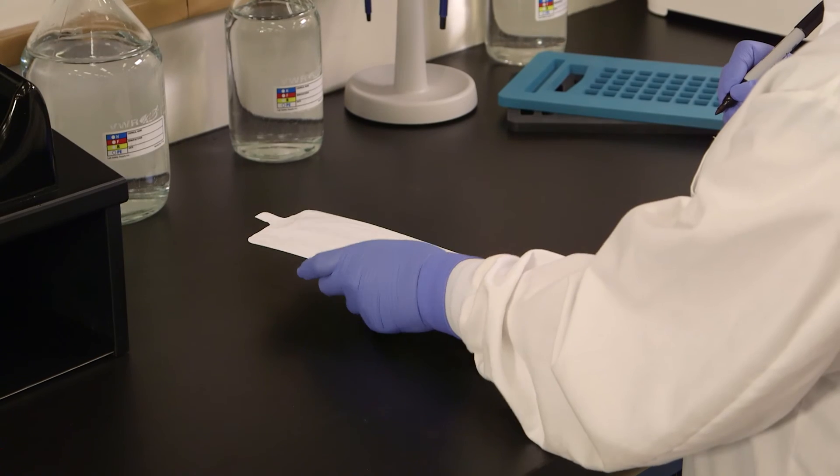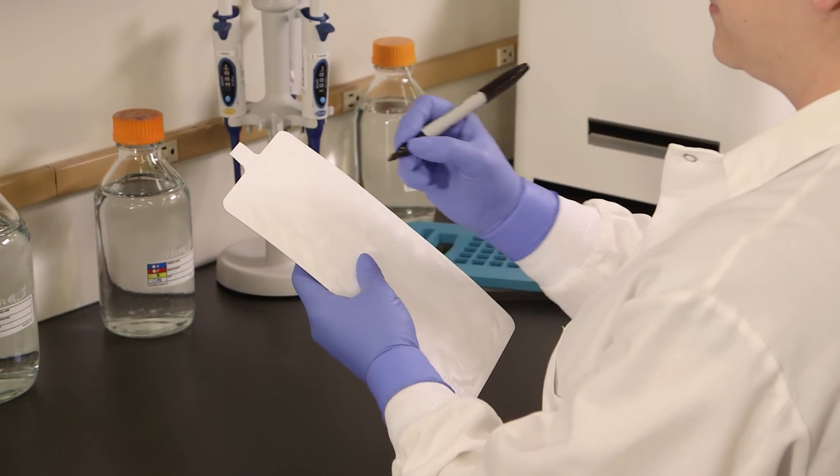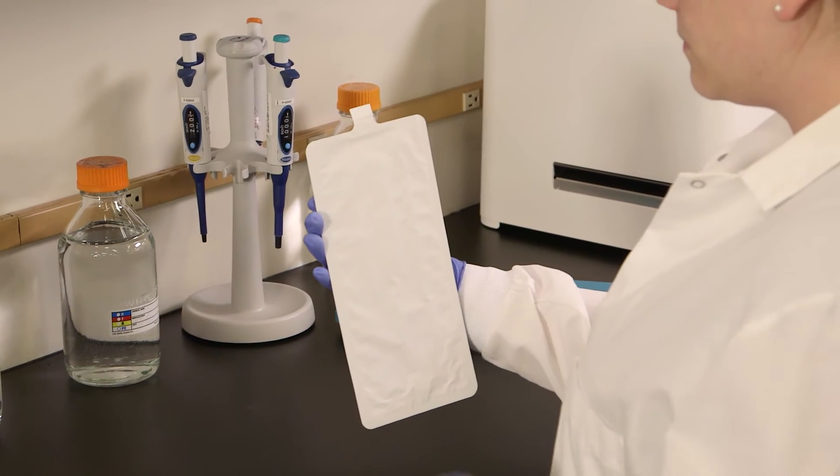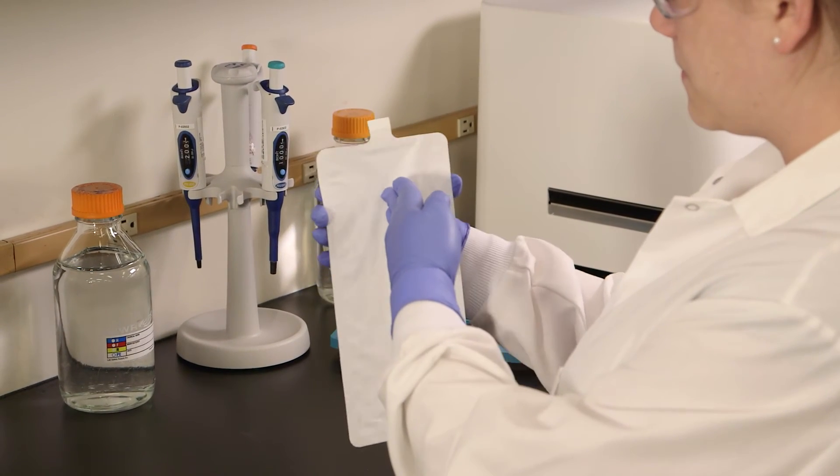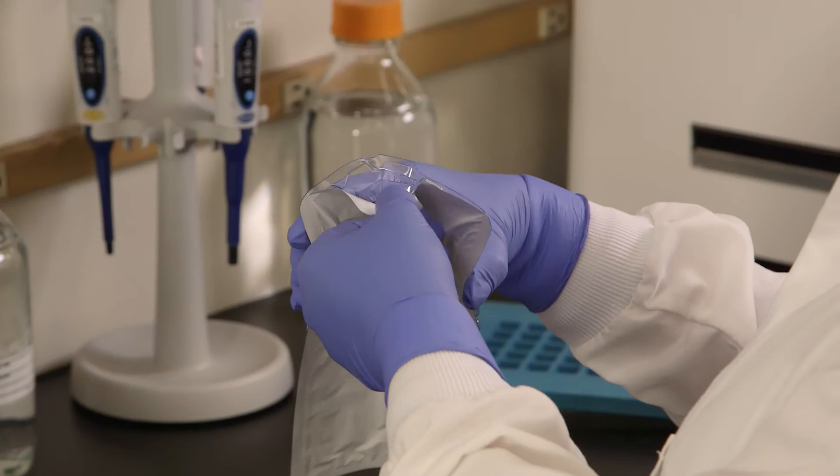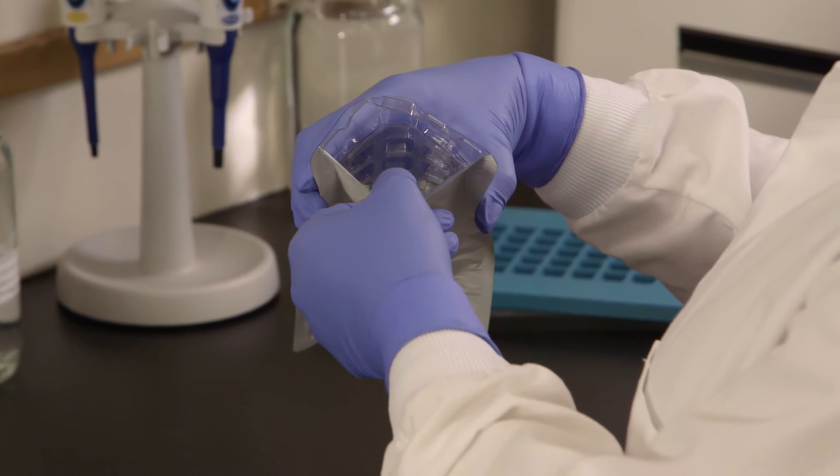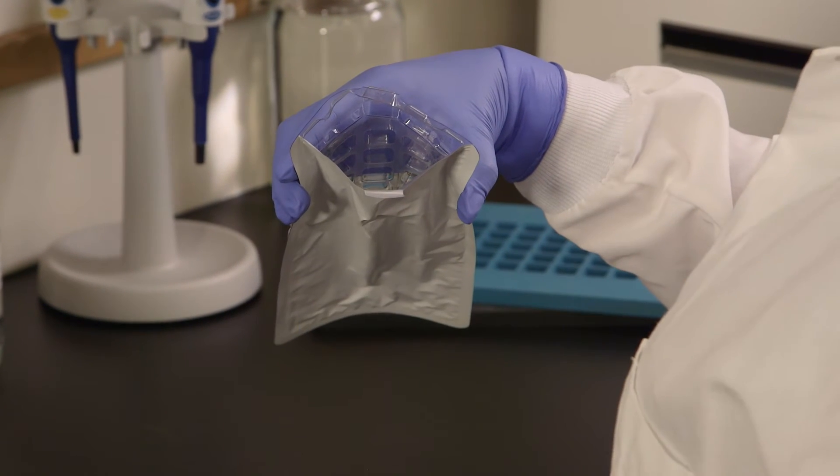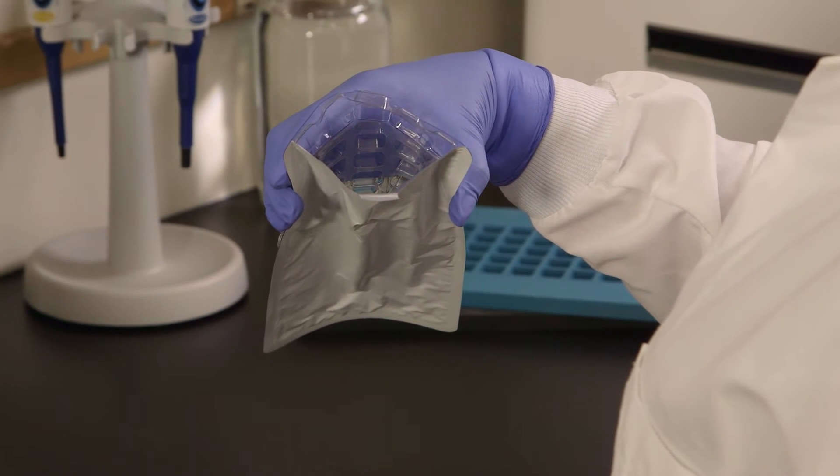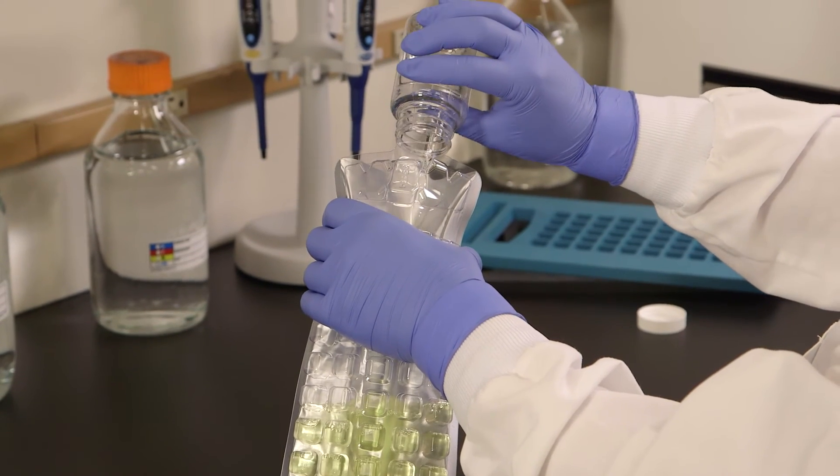Use only a permanent felt tip marker to label the Quantitray. Adhesive labels may adhere to the sealer roller and ballpoint pens may puncture the paper. Hold the Quantitray at the top with the well side facing your palm. Push the top edge of the Quantitray in with your free hand while squeezing the tray into a circle. Open the Quantitray by gently pulling the foil tab away from the plastic side. Be careful not to tear the tab. Do not touch the inside of the tray. Pour the sample mixture into the Quantitray, avoiding contact with the foil tab.